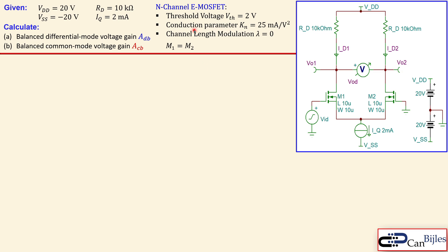2V for the threshold voltage, and the conduction parameter is 25 mA per square volt, and the channel length modulation lambda is 0. The RD, both these two resistors are 10 kilo ohms, and we have the VDD and VSS, 20 and minus 20 volts.